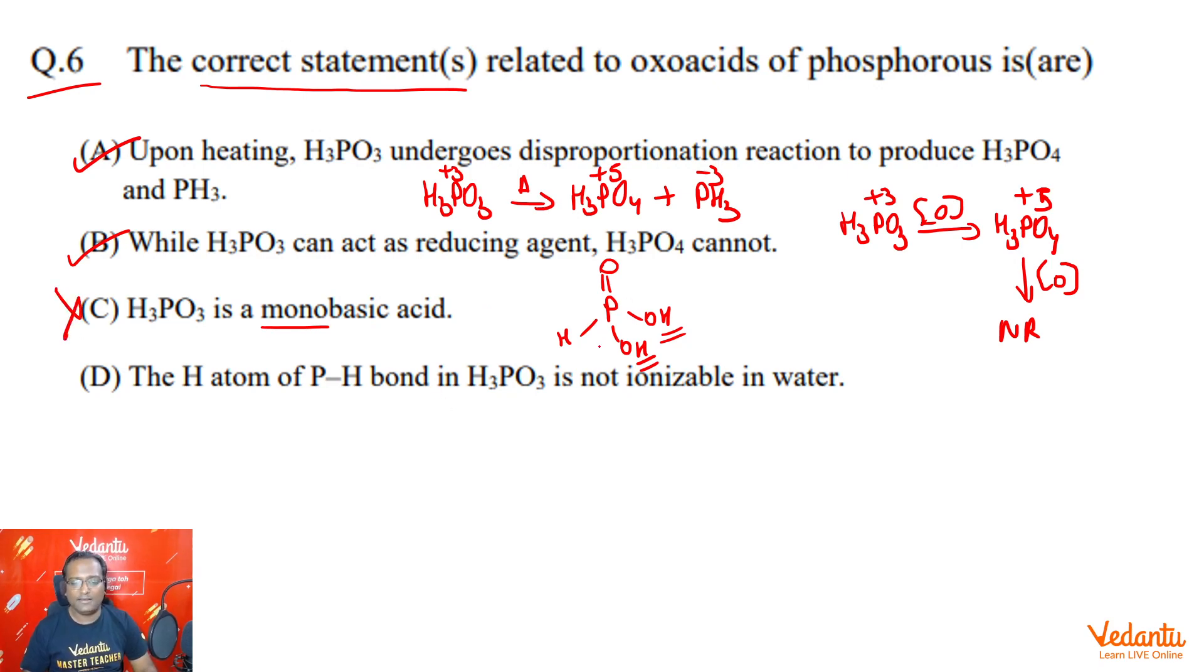As I said, out of the three, only two are ionizable, one is not ionizable because it is not connected to a high electronegative atom. Its conjugate base formed will not be stable. And therefore, the H atom of the P-H bond in H3PO3 is not ionizable in water.